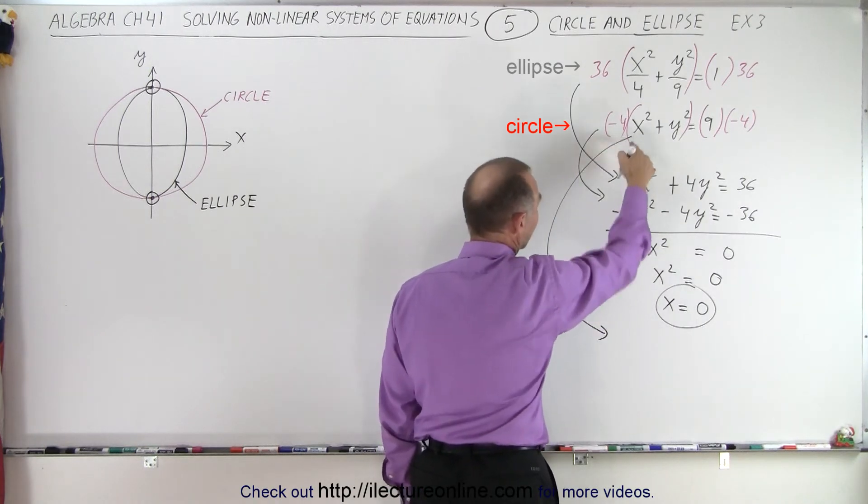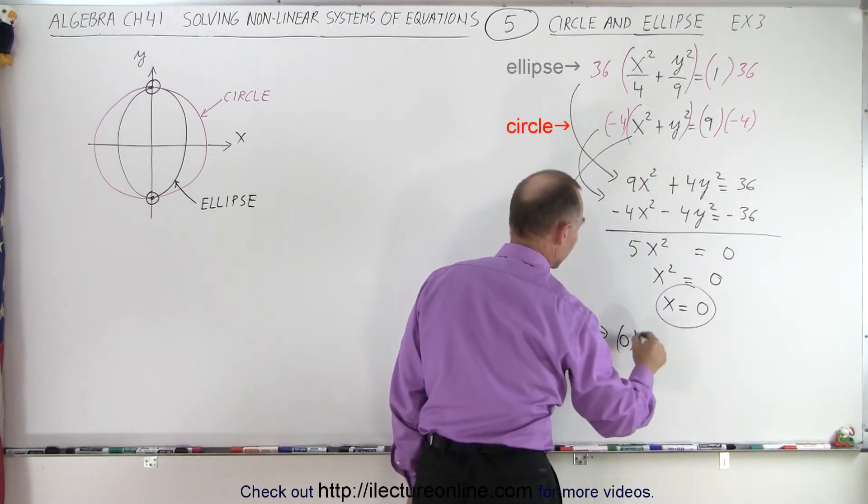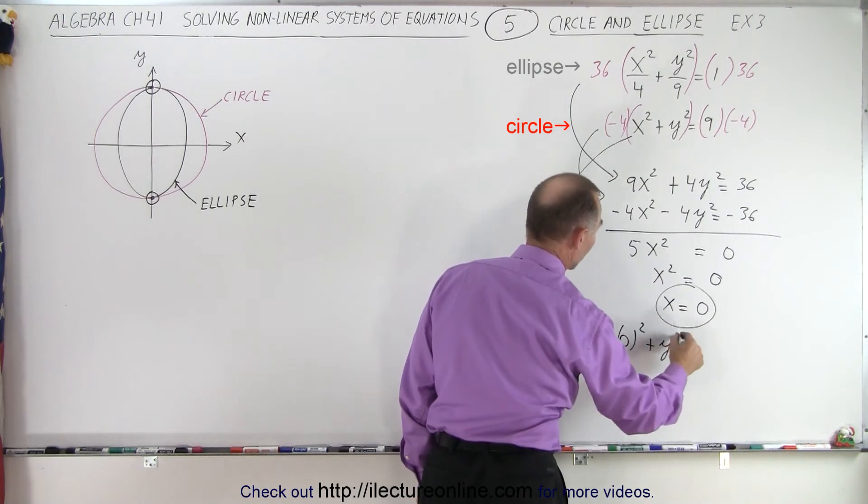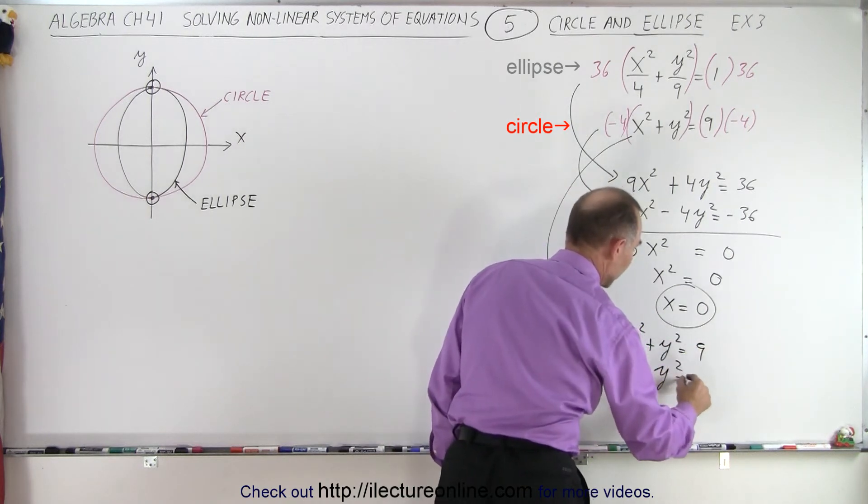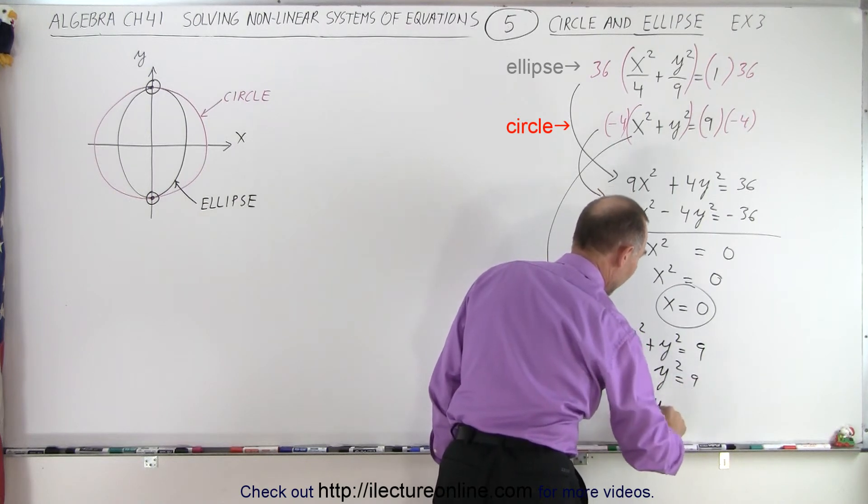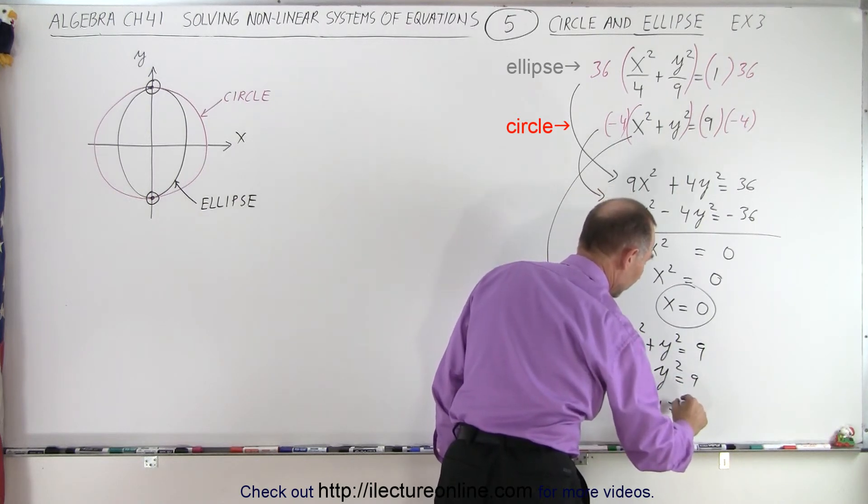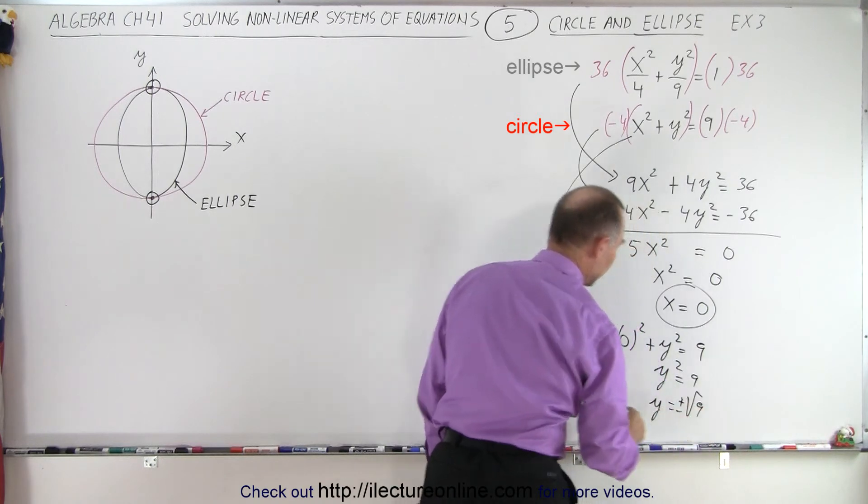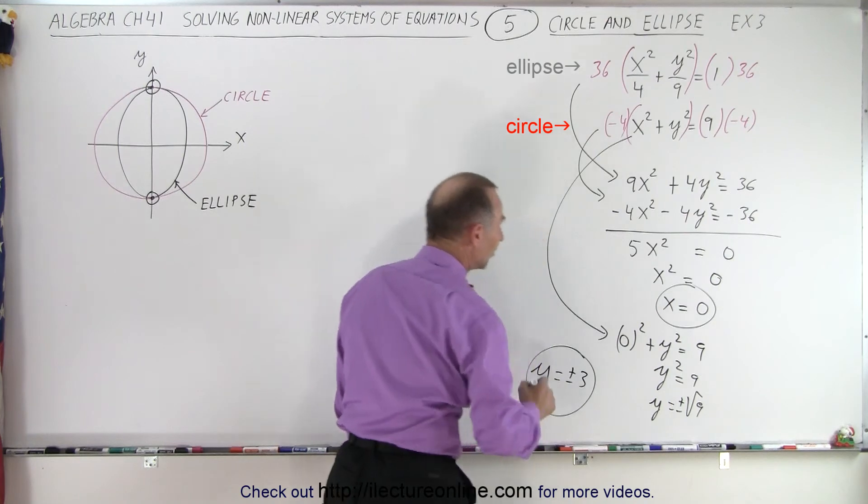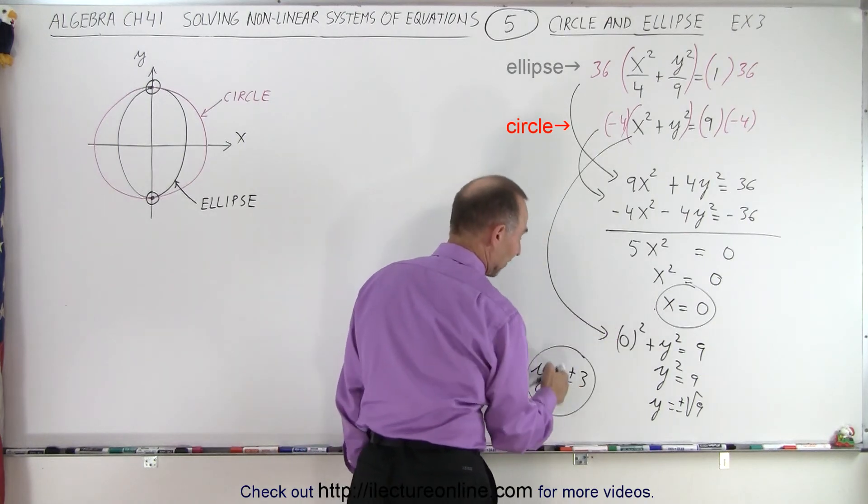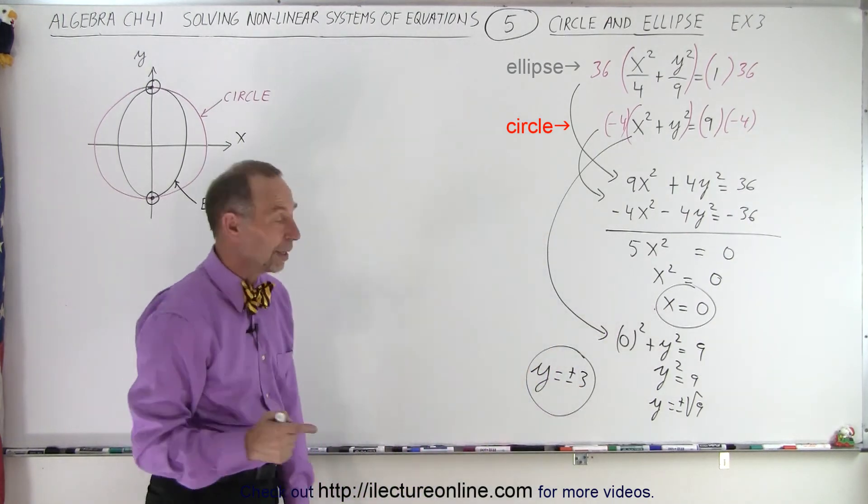We're going to let x equals 0, so 0 squared plus y squared is equal to 9, or y squared equals 9, or y is equal to plus or minus the square root of 9, which means that y equals plus or minus 3, which means that if x is equal to 0, we have two possibilities for y.